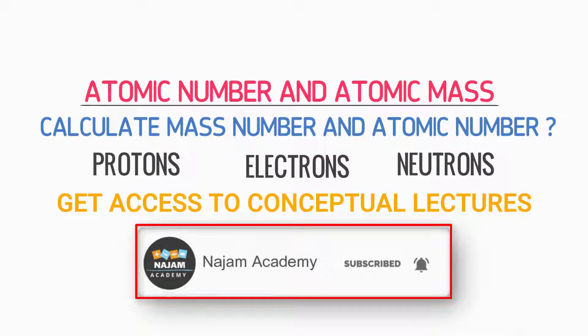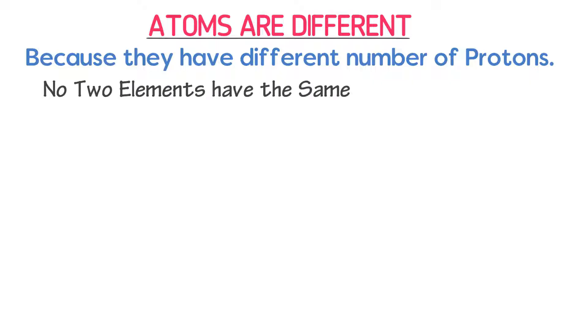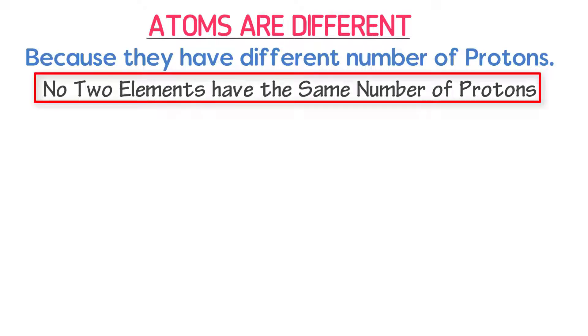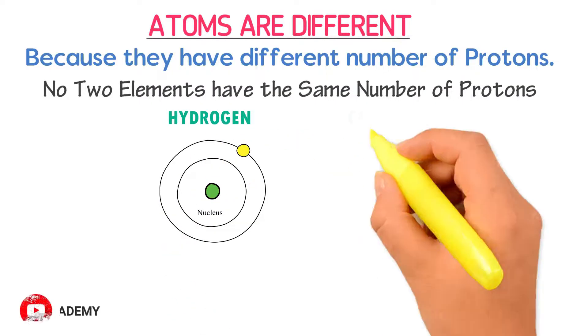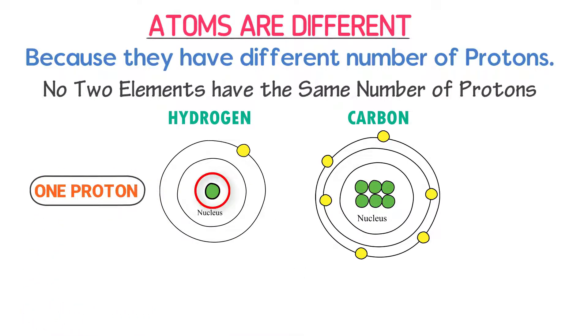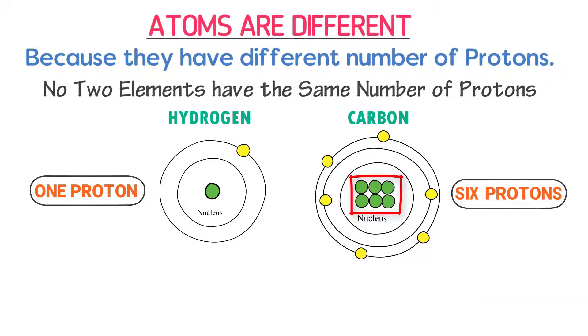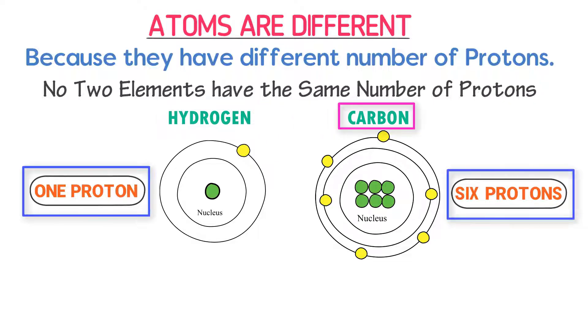We have learnt in the previous lecture that atoms are different from each other. It is because they have different numbers of protons. No two elements have the same number of protons. For example, consider hydrogen atom and carbon atom. There is only one proton in the hydrogen nucleus, and there are six protons in the carbon nucleus. Thus hydrogen atom is different from carbon atom due to number of protons.